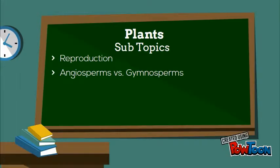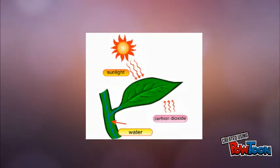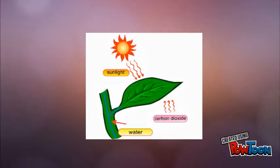Plants use DNA for their genetic code. Plants have chromosomes and cells just like every other organism on this planet. Plants use cellular respiration as a means of creating energy for cellular activities, just like animals do.